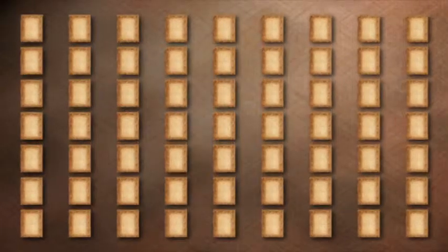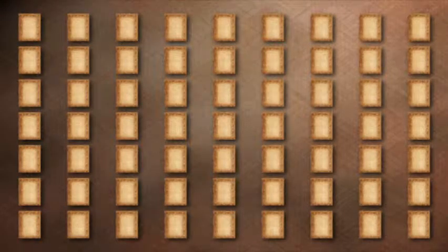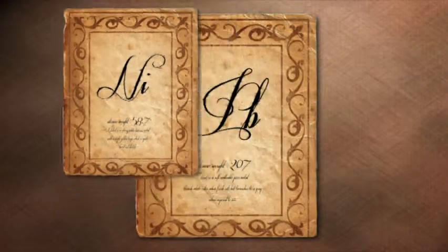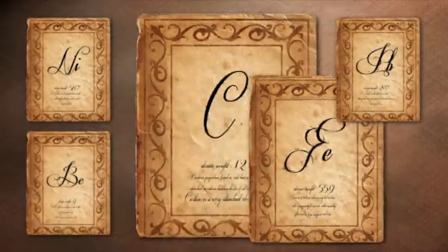To make sense of these patterns, he created a card for each of the 63 known elements at that time. Each card contained the element symbol, atomic weight, and its chemical and physical properties.